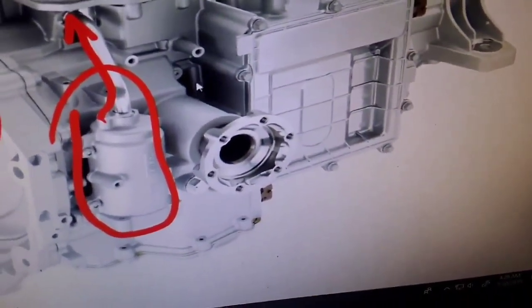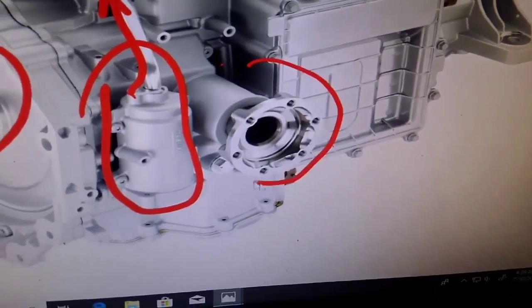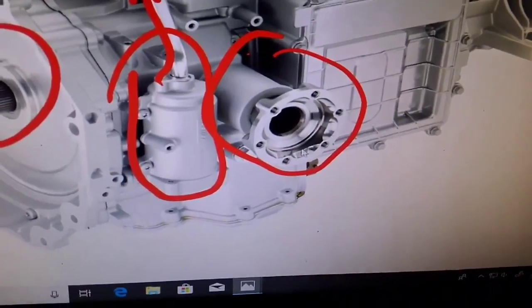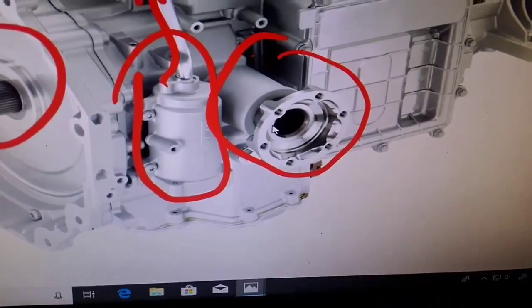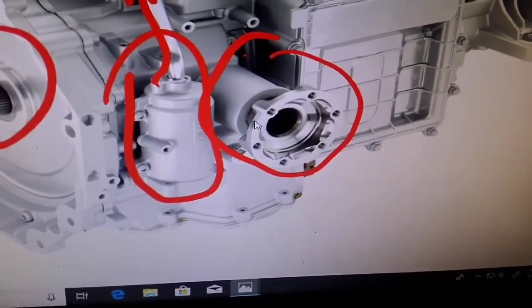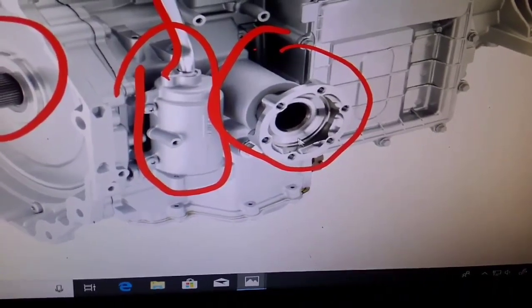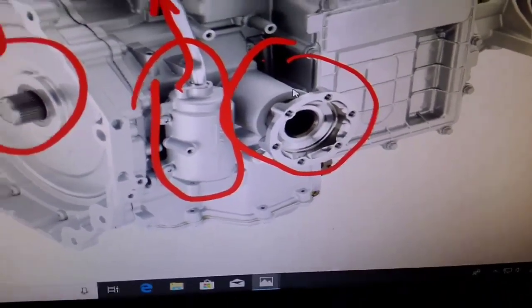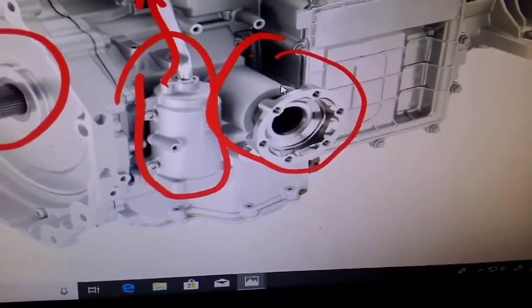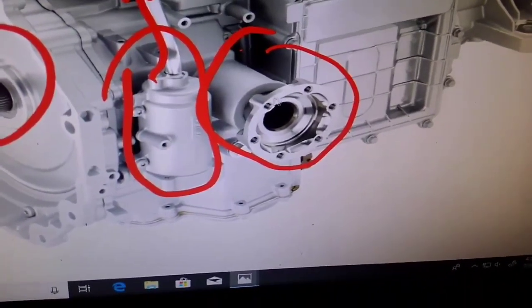And now, look more toward the back. We can definitely see that this is an output shaft. Now, this six-bolt mounting flange is very similar to what we use on transfer cases for rear propeller shafts. I think they're definitely using some type of six-bolt axle shaft or half shaft, as it were, to the rear wheels.